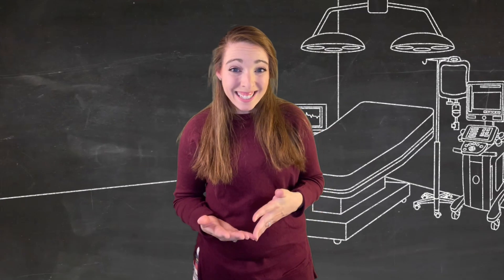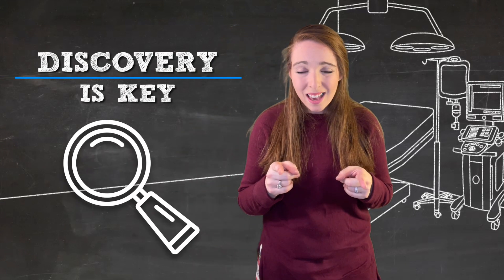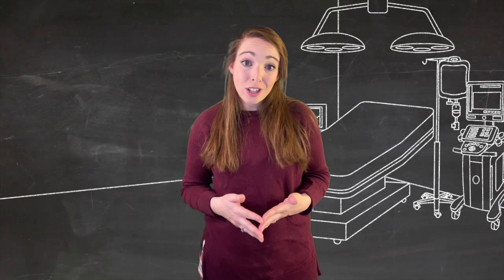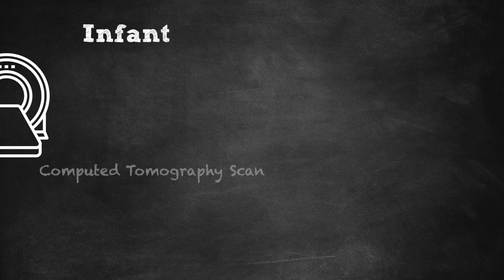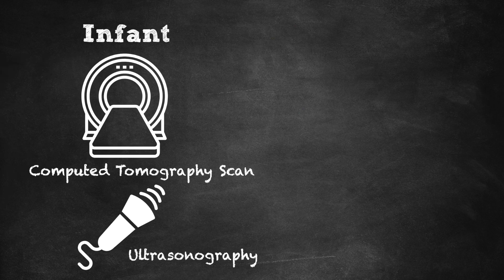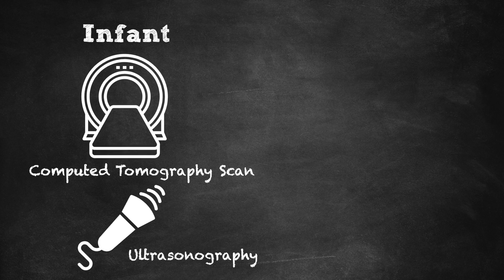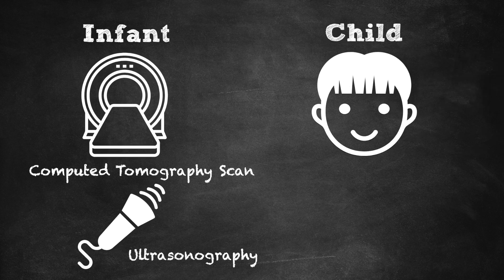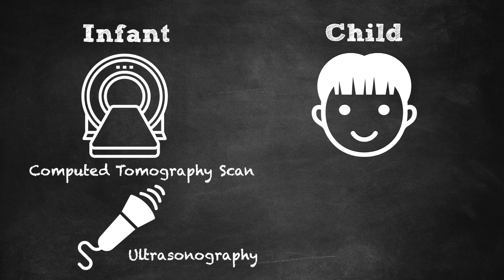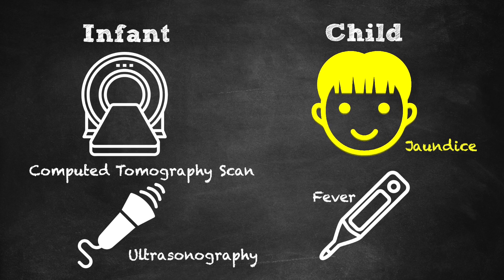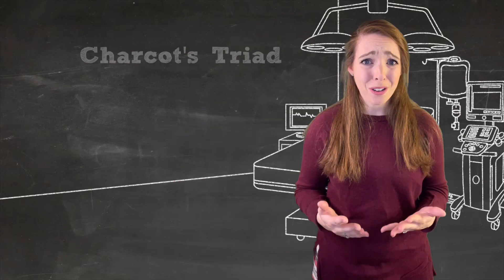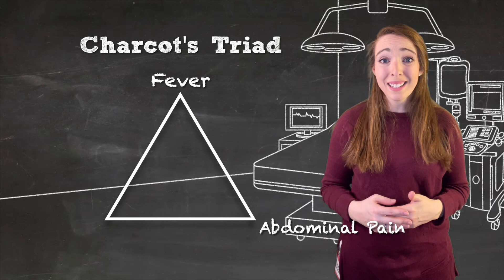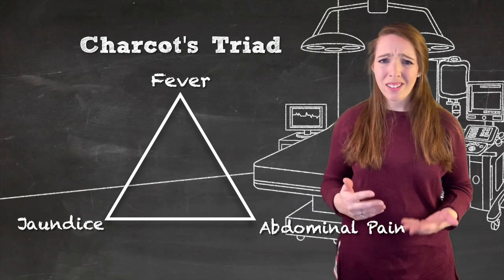Now that we know how to refer to these cysts, discovery is key. The presenting symptoms depend on the age at presentation. In younger children such as infants, it's often diagnosed incidentally on axial imaging or ultrasound for other causes. In older children, you will get symptoms consistent with cholangitis, such as jaundice or fever. Patients can also have a palpable right upper quadrant mass — this sounds suspiciously like Charcot's triad, which means we could have a pretty sick kid on our hands. Luckily, this is a fairly uncommon presentation.